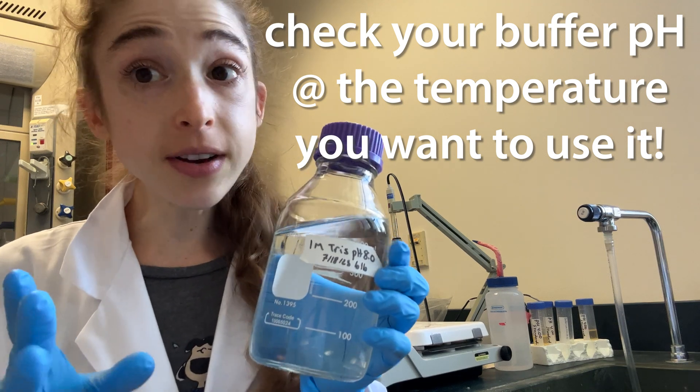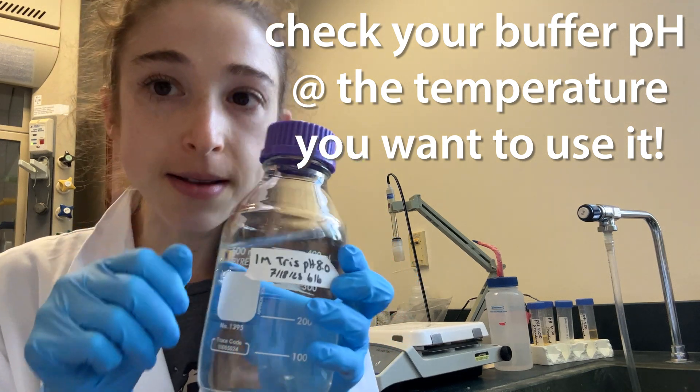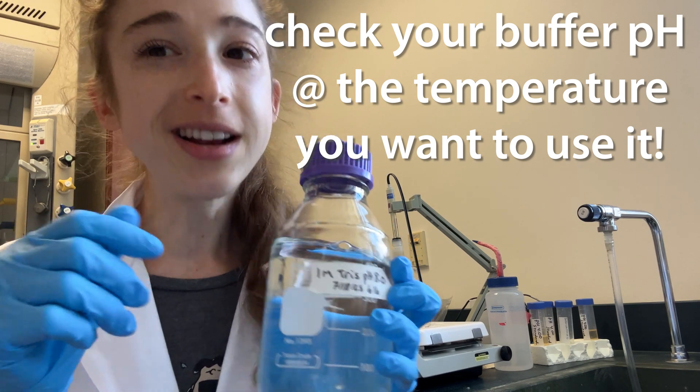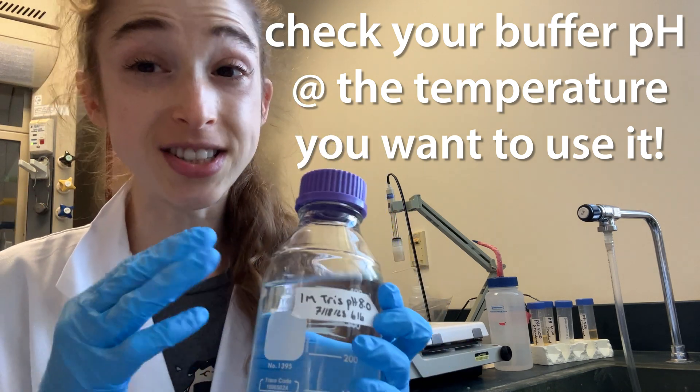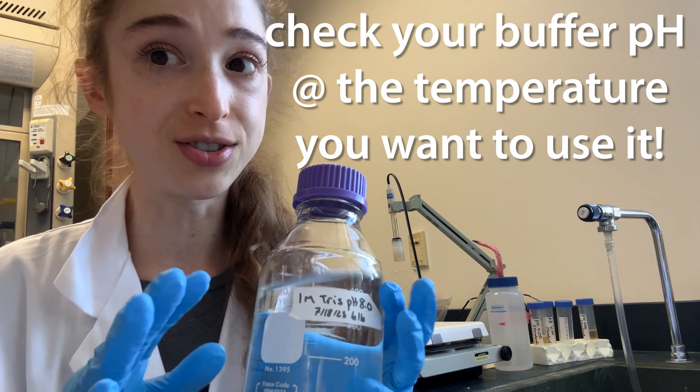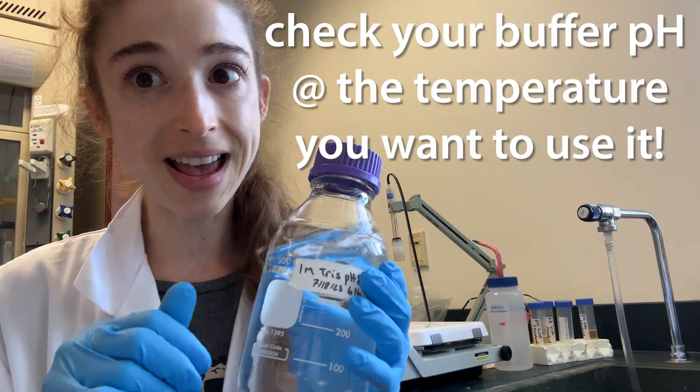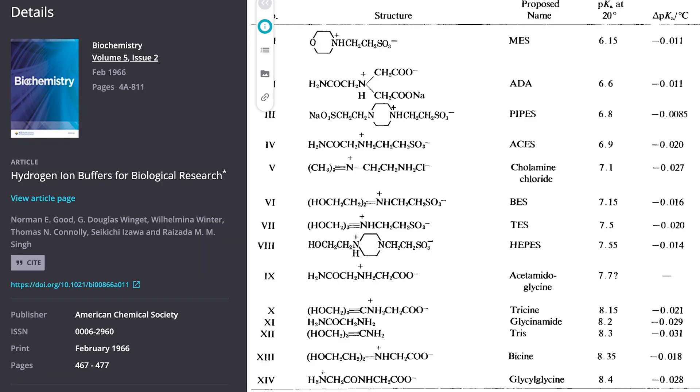Whenever you prepare a pH buffer, even if you calculated beforehand how much of the acid and base to mix using the Henderson-Hasselbalch equation to get to that perfect pH, you're still going to want to check the pH and adjust it as needed using a strong acid or a strong base. And you're going to want to check it at the temperature that you're going to be using it at, because the temperature can actually affect the pH.